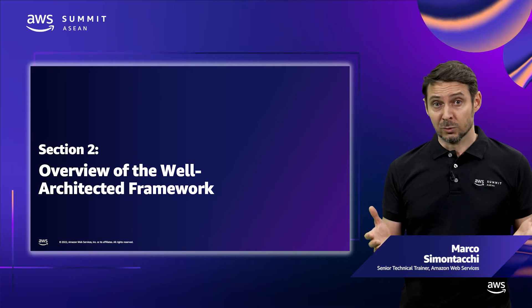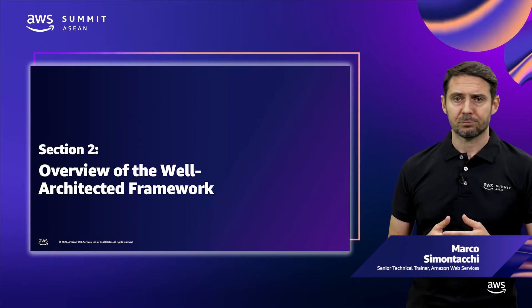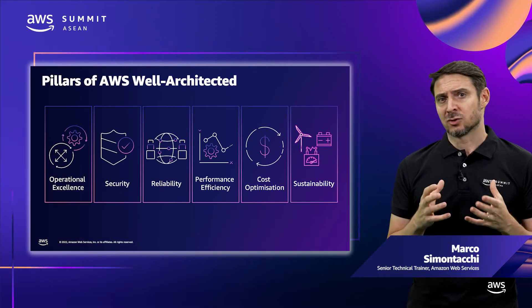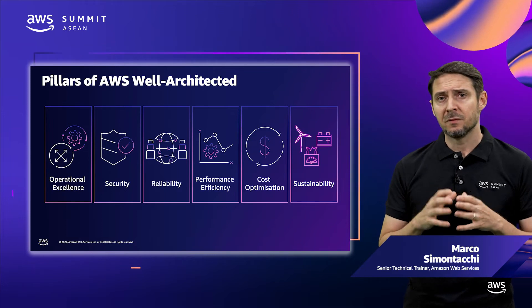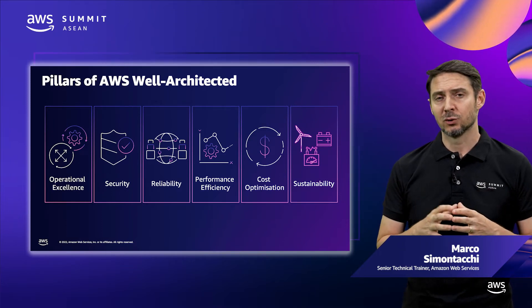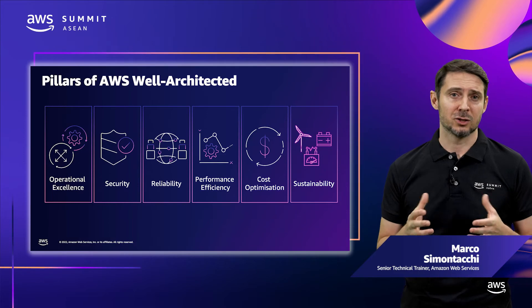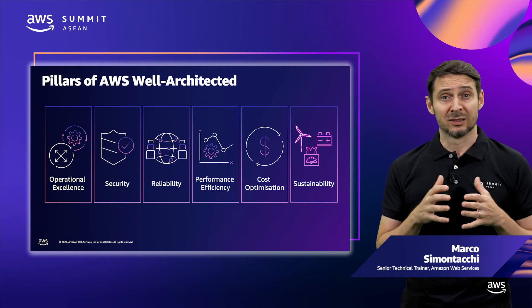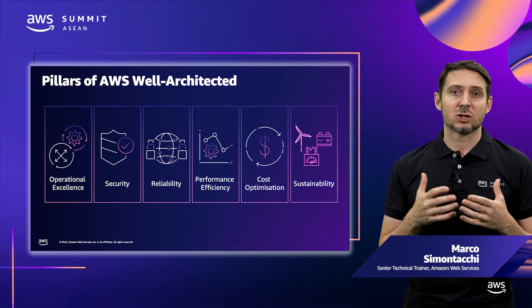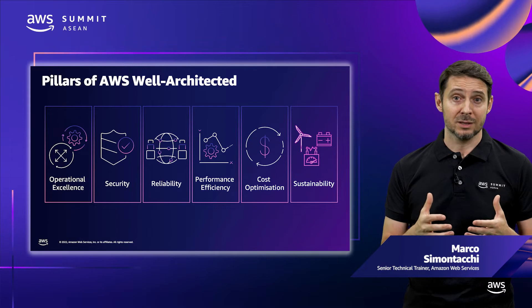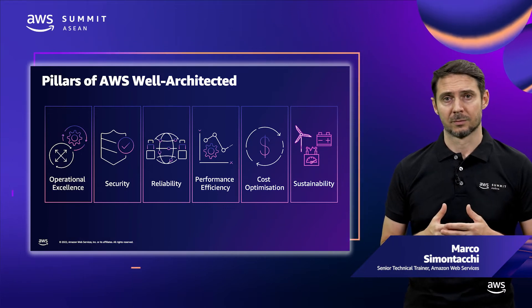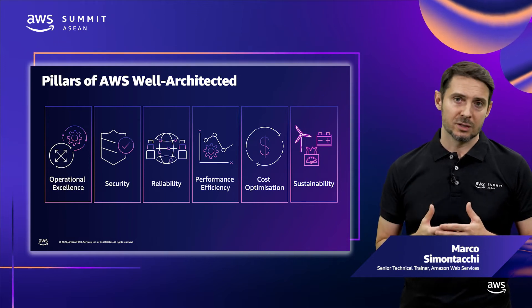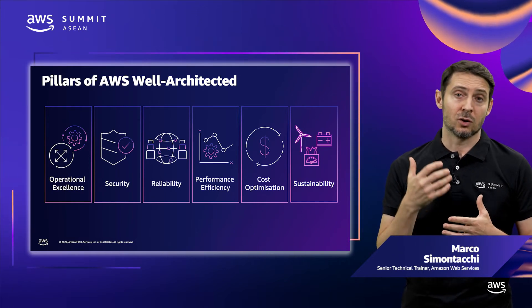Let's have a look at an overview of the framework and the six pillars. Creating a technology solution is a lot like constructing a physical building. If the foundation is not solid, it can cause structural problems that undermine the integrity and function of the building. If you neglect the six pillars when architecting technology solutions, it can become a challenge to build a system that delivers functional requirements and meets your expectations. When you incorporate these pillars, it will help you produce stable and efficient systems, allowing you to focus on functional requirements.